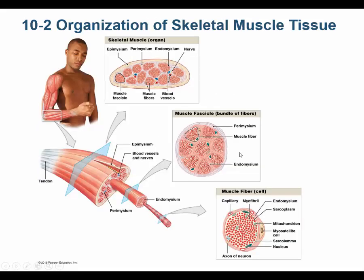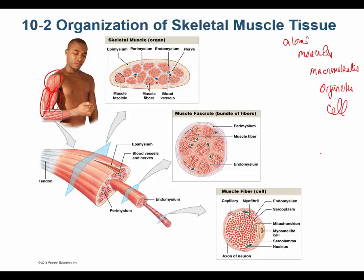The architecture of a muscle — you need to know this for both lab and lecture. Every named muscle is an organ: the biceps brachii, the deltoid, the triceps brachii are all organs. Remember the levels of organization: atoms, molecules, the four biological macromolecules, organelles, cells — the basic unit of life. Two or more cells form tissues, and two or more tissues form organs, so every named muscle must have more than two tissues in it.